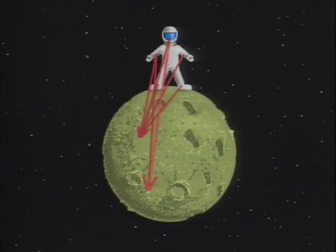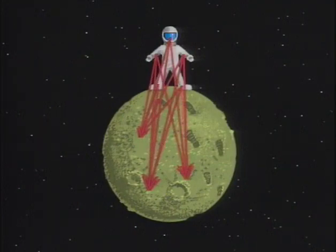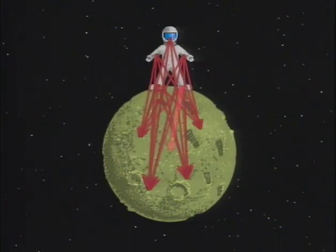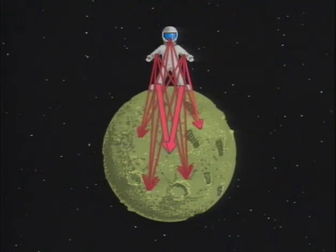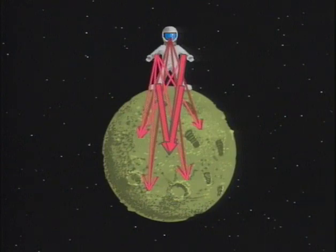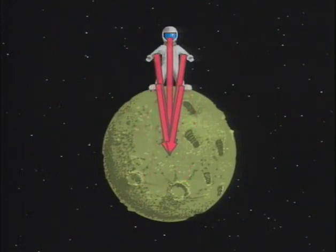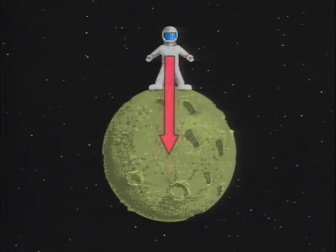Newton's law of universal gravitation explains that a force exists between any two particles of mass anywhere in the universe. Therefore, every particle of mass in the astronaut is attracted by every particle of mass in the moon. What's the net effect of all these forces added together? Each body attracts the other as though all of its mass were concentrated at its center of mass.